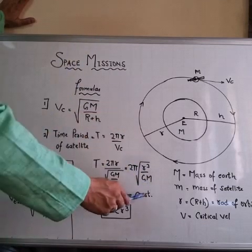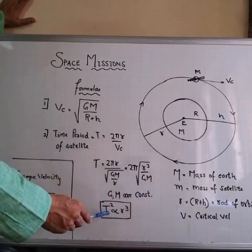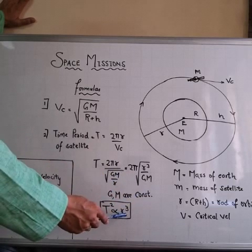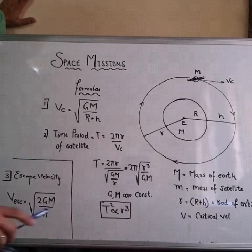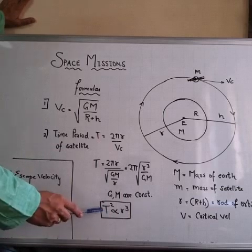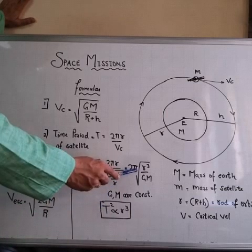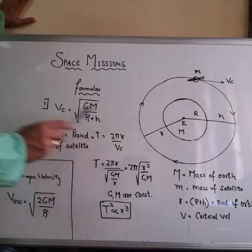Here GM are constants, so the equation can be written as T squared directly proportional to r cubed. Remember this formula — it will be useful in the numericals.